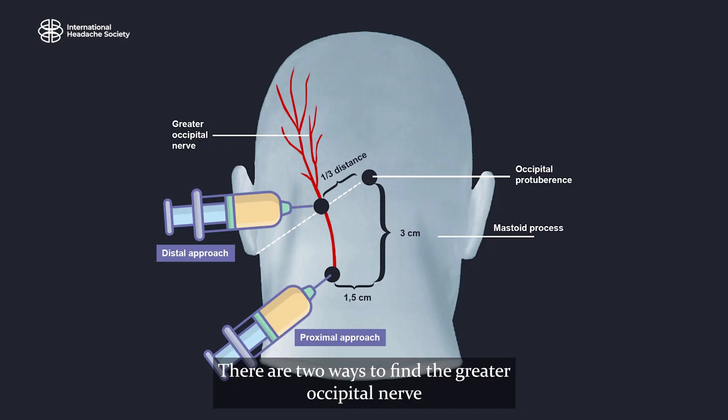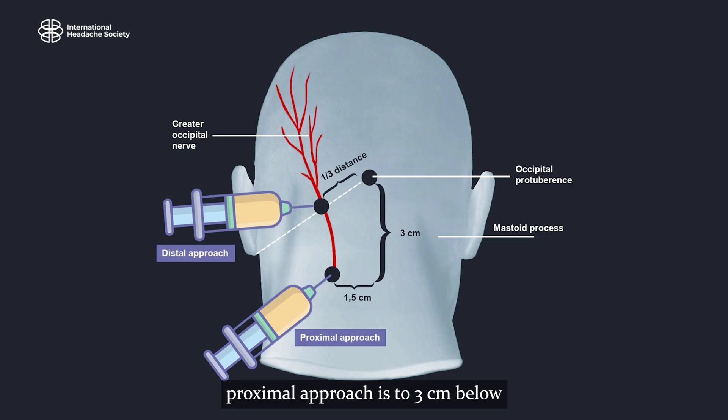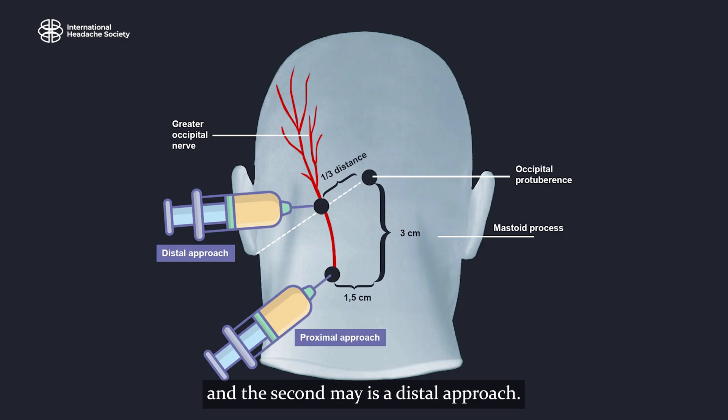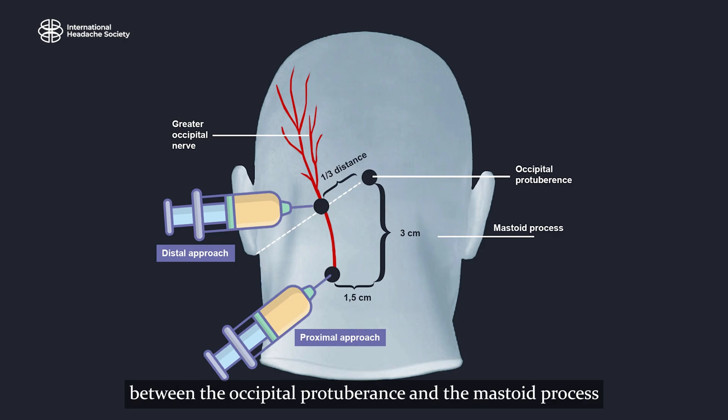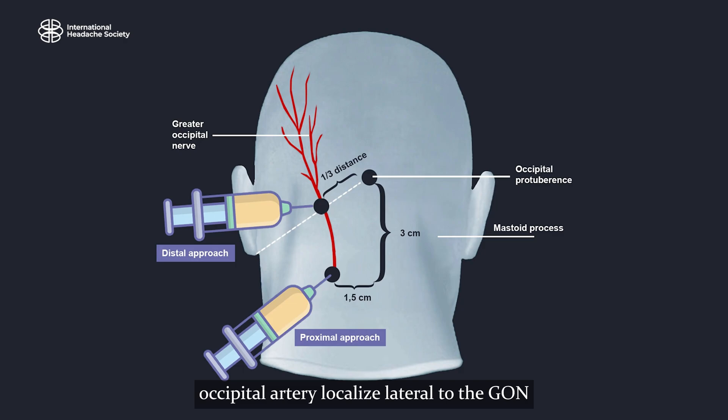There are two ways to find the greater occipital nerve. The proximal approach is 3 cm below and 1.5 cm lateral to the external occipital protuberance. The second way is the distal approach, where the GON is localized one-third medially of the way between the occipital protuberance and the mastoid process. The occipital artery is localized lateral to the greater occipital nerve.